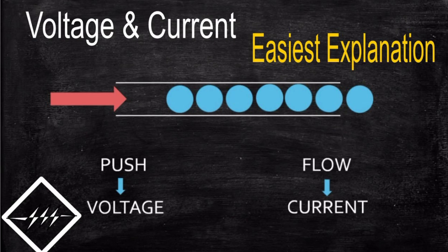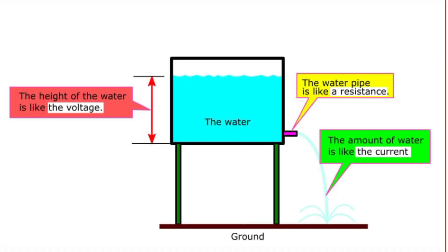If we see the mechanism of voltage and current in the circuit, voltage is like pressure that drives the electric charges, whereas current is the flow rate of the electric charges.